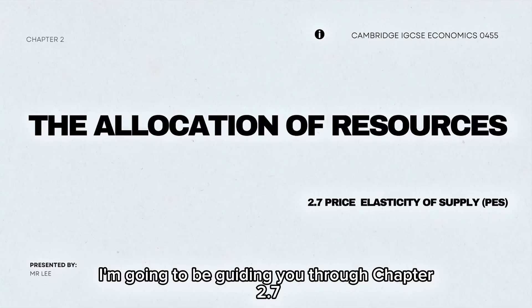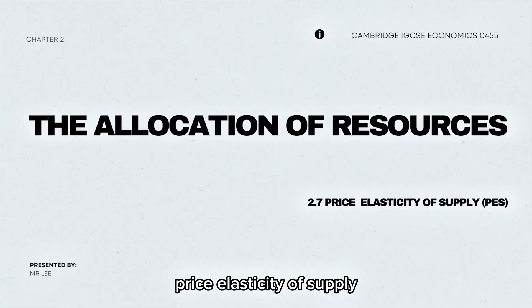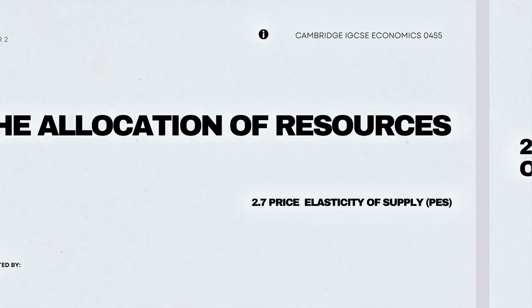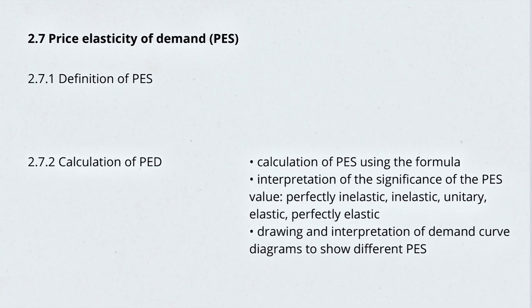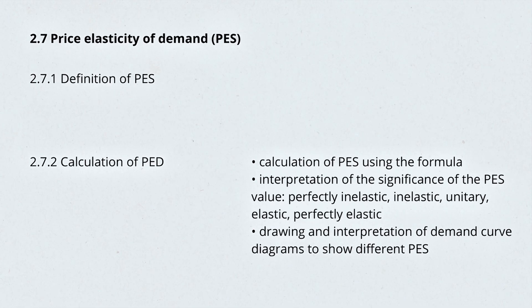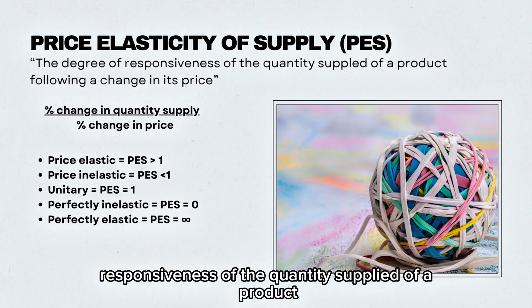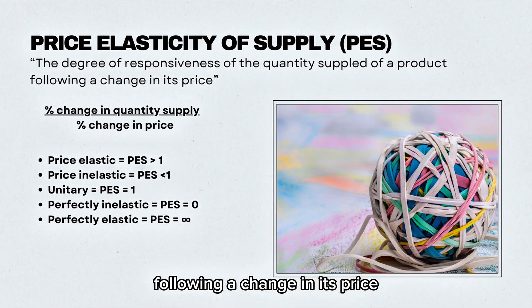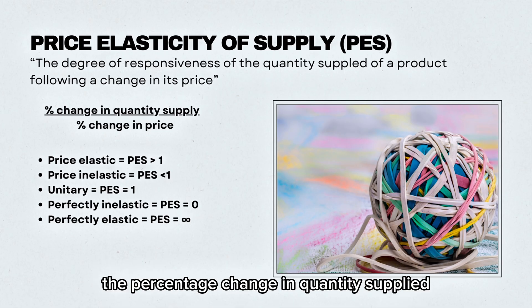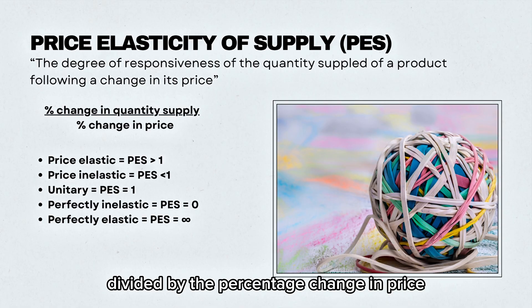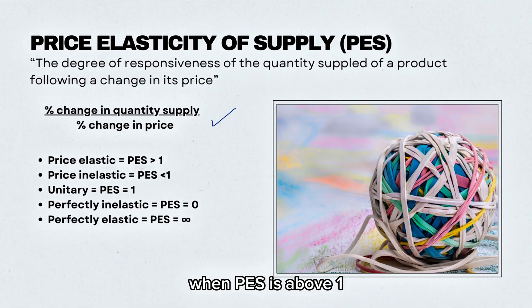In this video, I'm going to be guiding you through Chapter 2.7, Price Elasticity of Supply. Price Elasticity of Supply is the degree of responsiveness of the quantity supplied of a product following a change in its price. The calculation is as follows: the percentage change in quantity supplied divided by the percentage change in price.